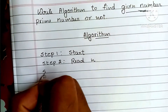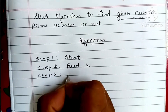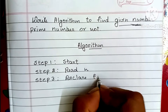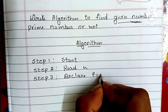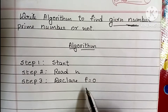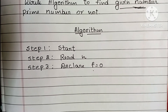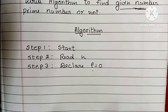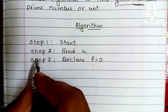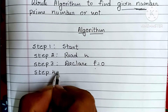Step 3: we have to declare a flag value. Declare F equal to 0 — initially F is equal to 0. A flag in programming is used to store a boolean value, that is 0 or 1, or true or false.